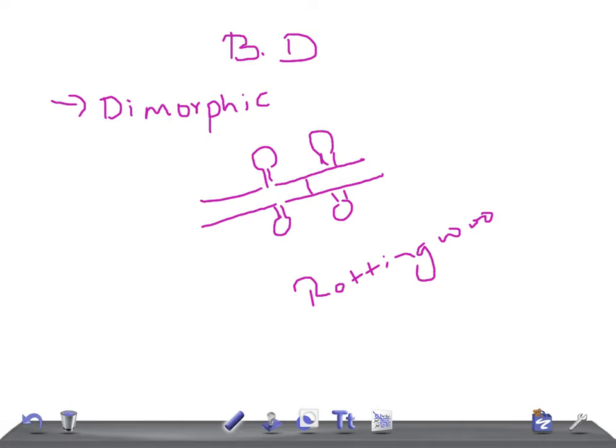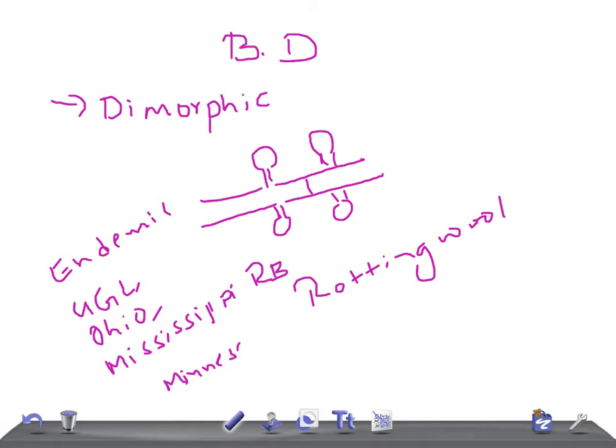Now very important for your USMLE examination - the endemic regions. You should know endemic regions: upper Great Lakes, Ohio, Mississippi riverbeds, southeastern seaboard of the U.S., and northern Minnesota into Canada. These are the endemic regions you should remember.